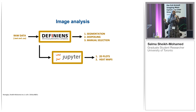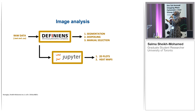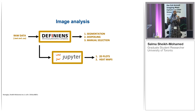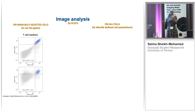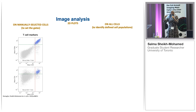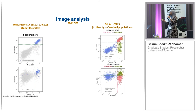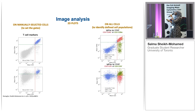We were also interested in what kind of quantitative analysis could be done for MS using IMC. We collaborated with Dr. Trevor McKee and Fred Fu from the Star Institute, using a combination of Definians and Jupiter — Definians for segmenting, despeckling, and manual selection, and Jupiter to create 2D plots and heat maps. We manually selected T cells based on biologically relevant markers to create gates for CD8, CD4, and CD3 positivity, then applied those gates to all T cells. We saw really nice separation of CD8 positive T cells, CD4 positive, and double negative cells.